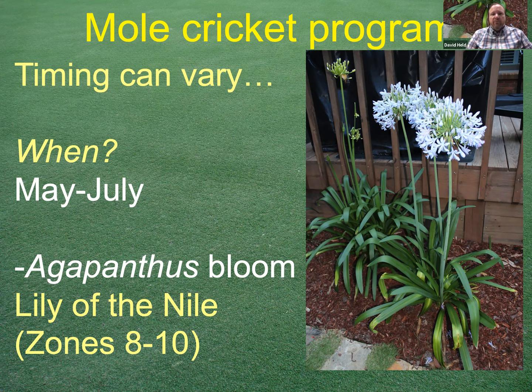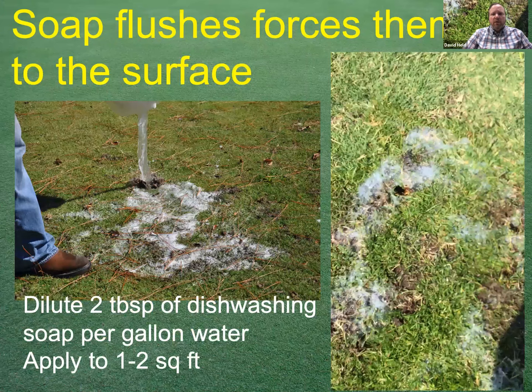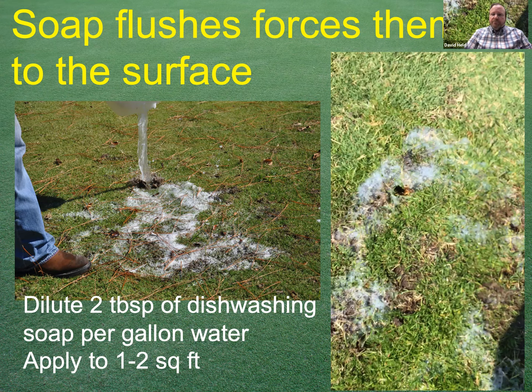How do you find those small mole crickets? You use a soap flush technique, which forces them to the surface. Put about two tablespoons of dishwashing soap per gallon of water and apply it over roughly one to two square feet — the mole crickets will then emerge from the soil. If you're doing this in spring during expected egg hatch, they're going to be very small, so this requires getting on your hands and knees on the grass surface looking for these tiny nymphs.